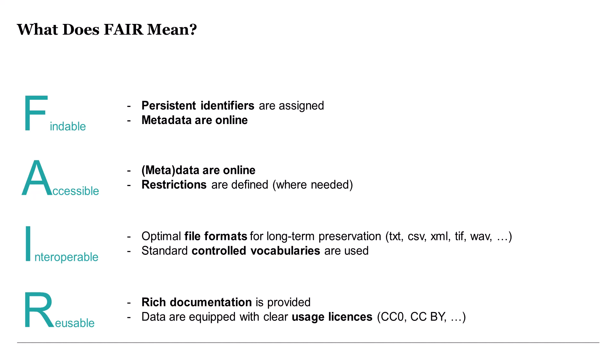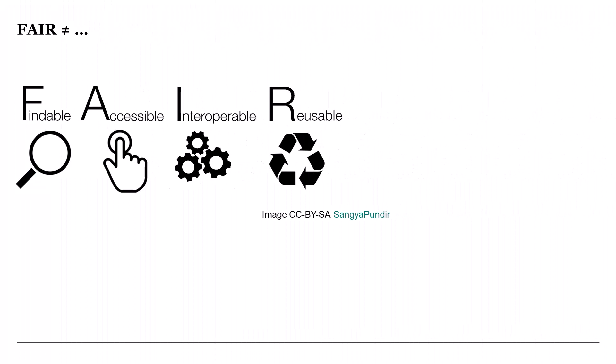It is also important to note that FAIR is not a standard. The FAIR guiding principles are sometimes incorrectly referred to as a standard, even though the original publication explicitly states they are not. FAIR simply describes the qualities or behaviors required of data resources to achieve their optimal discovery and scholarly use. The principles are not necessarily about open data — you can work in a FAIR manner with data that is not intended for public availability. They do, however, require clarity and transparency around the conditions governing access and reuse. FAIR is not only available to individual researchers, but the conditions on the access of any piece of data are always determined by the data owner.